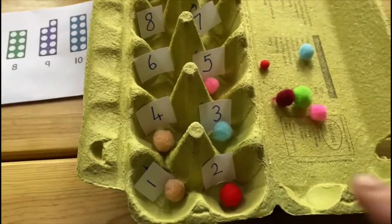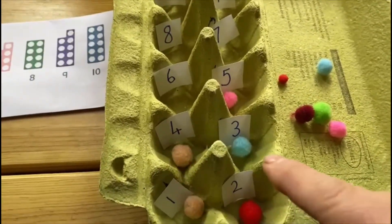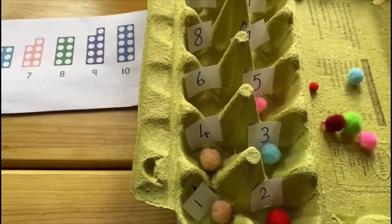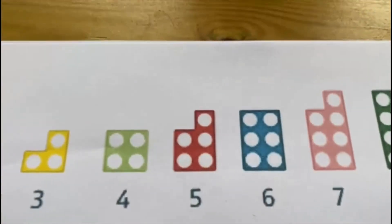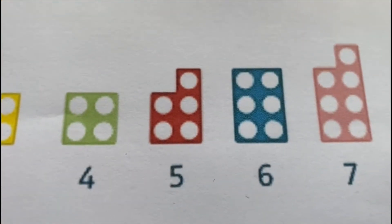And look, I've got this shape: one, two, three, four, five. Just like the number five in Numicon.